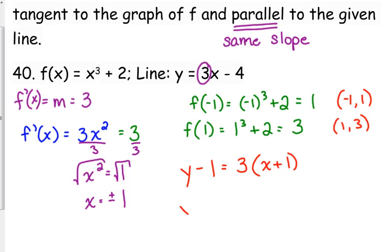And we've got y minus 3 is equal to 3 times x minus 1. So there are two places on this curve where the tangent line is parallel to the given line.